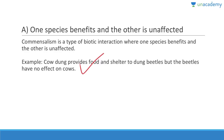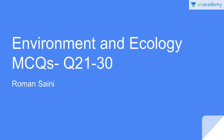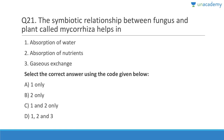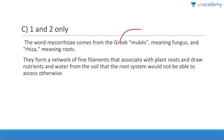Let us discuss questions 21 to 30. Question twenty-one: The symbiotic relationship between fungus and plant called mycorrhiza — it helps in absorption of water and absorption of nutrients, but not gas exchange. Answer is A, one and two. Myco means fungus, rhiza means roots. They form a network of fine filaments that associate with plant roots and draw nutrients and water from the soil that the root system would not otherwise be able to access.